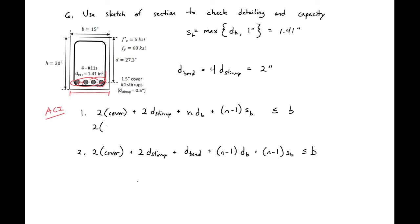The first: two times our cover, 1.5, plus two times our stirrup, 0.5, plus n four bars times 1.41 inches, plus n minus one, so three spaces, times 1.41 inches per space. This will give us a value of 13.9 inches, which is less than our base width of 15 inches. We know that our first check is okay.